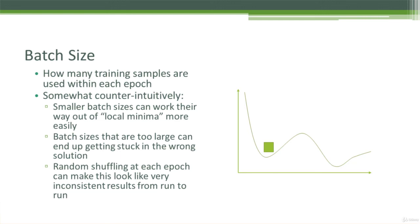So batch sizes that are too large can end up getting stuck in the wrong solution. And what's even weirder is that because you will usually randomly shuffle your data at the beginning of each training epoch, this can end up manifesting itself as getting very inconsistent results from run to run. So if my batch size is just a little bit too big, maybe sometimes I'll get stuck in this minima and sometimes I won't.